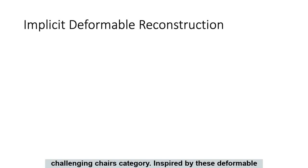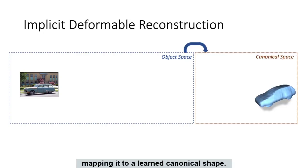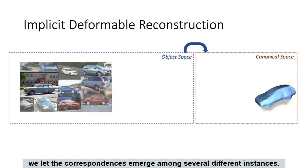Inspired by these deformable reconstruction approaches, we take an image of an object and learn its underlying 3D shape by mapping it to a learned canonical shape. By doing this for several different objects in the category, we let the correspondences emerge among several different instances.